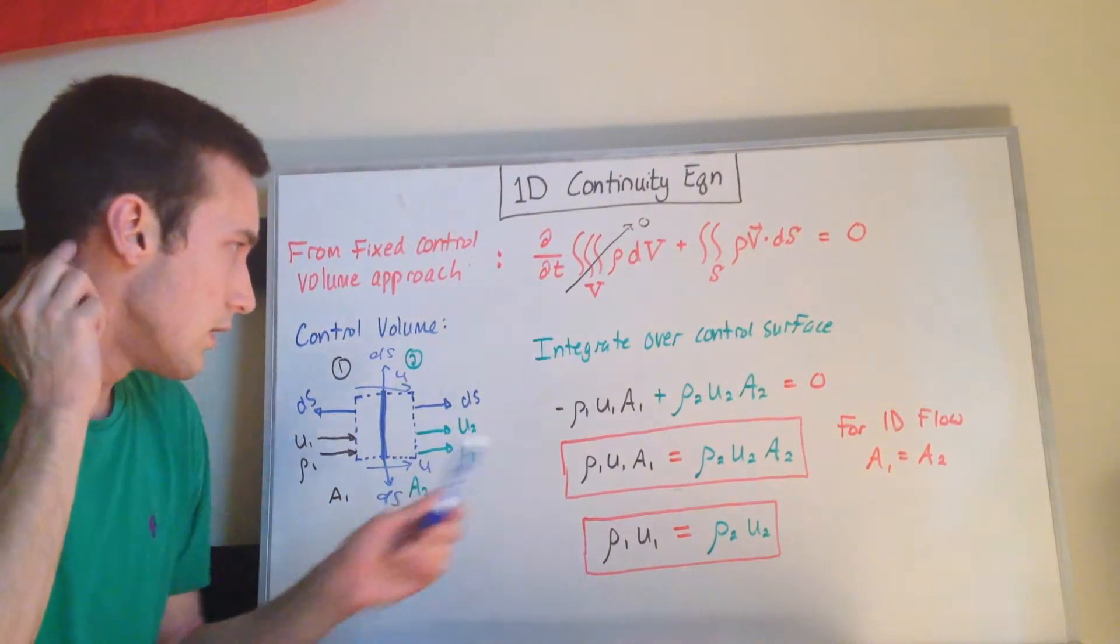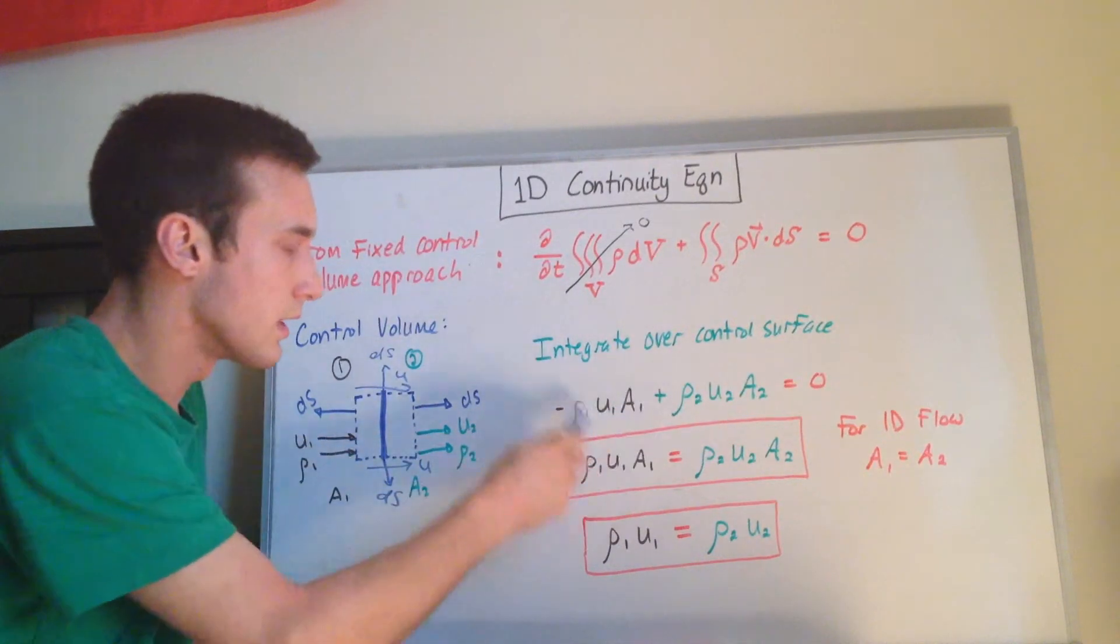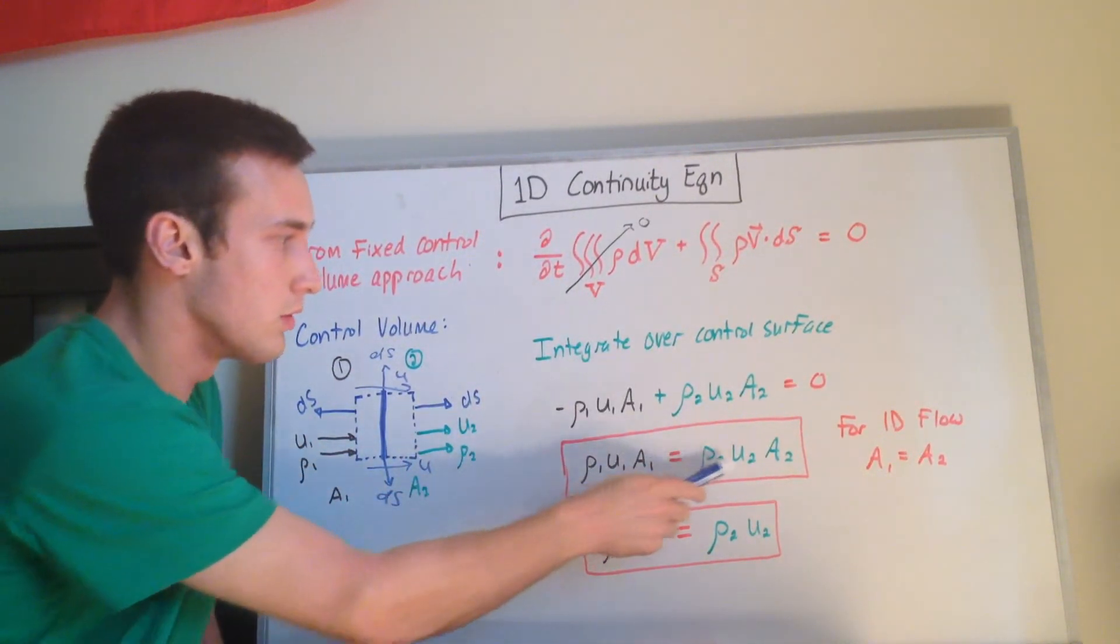Okay, so now that we have this equation here, we can just rearrange, bring this over to the right-hand side, or the other way around, and you get rho1u1a1 is equal to rho2u2a2.